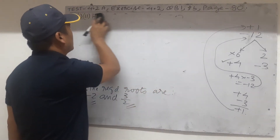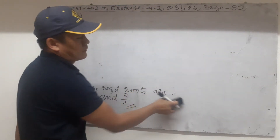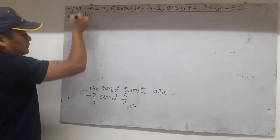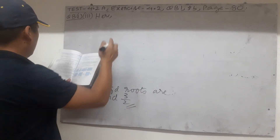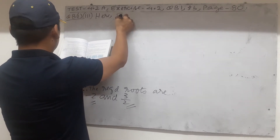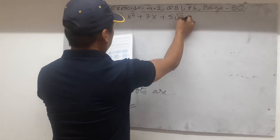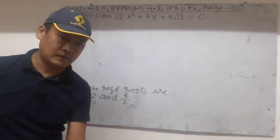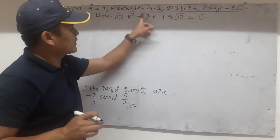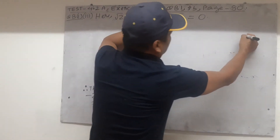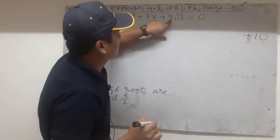The next one I'm going to do more directly. Given: root 2 x squared plus 7x plus 5 root 2 equals 0. First thing: arrange in descending order of x power — x squared first, x second, no-x term third — already arranged. Multiply first and third term: plus into plus is plus, root 2 into 5 root 2 equals root 2 times root 2 times 5 equals 2 times 5 equals 10, so the product is plus 10. Middle term is clearly plus 7.